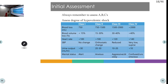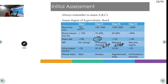After securing the airway, assess the circulation by classifying hemorrhagic shock. Class I: less than 750 mL blood loss, no tachycardia, normal BP. Class II: tachycardia and reduced pulse pressure. Class III: hypotension with low systolic BP. Class IV: profound tachycardia, reduced urine output, base deficit less than −10. Classes III and IV require massive transfusion protocol.